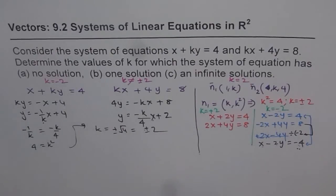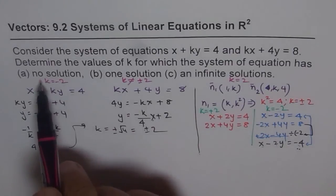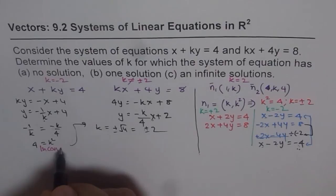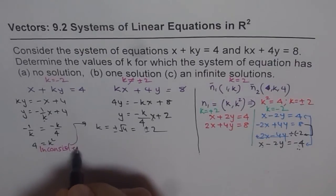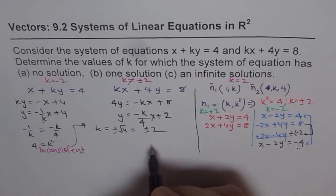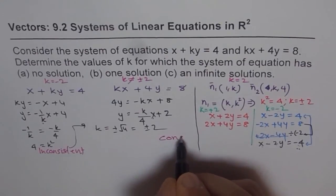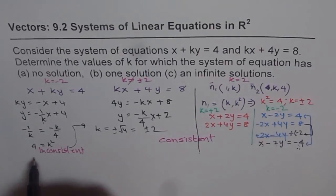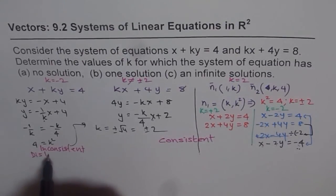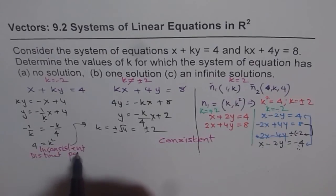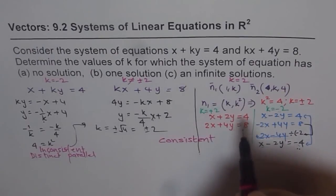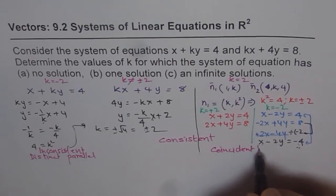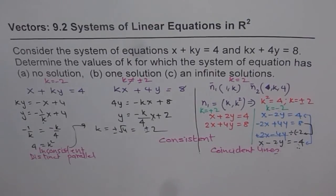Now, let's get back to the technical terms. When you have no solution, we say the system is inconsistent. If we have a solution, whether 1 or infinite, the system is consistent. Here we have distinct parallel lines, here we have coincident lines. These are a few terms which you should remember.